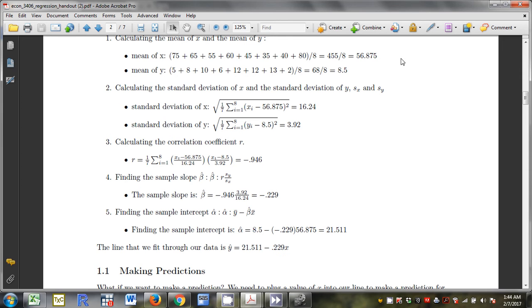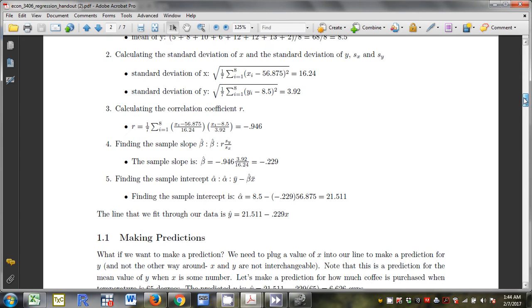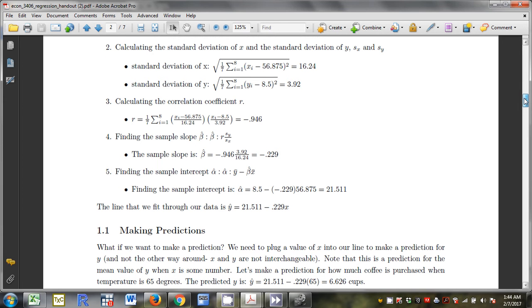So let's say we want to make a prediction. How do we make a prediction? We plug a value of x into our line. So I make a prediction for the value of y when x is some number. This is my prediction for the mean. Let's make a prediction for how much coffee is purchased when the temperature is 65. I just plug 65 right in for x. 21.511 minus .229 times 65. I predict 6.626 cups are purchased.